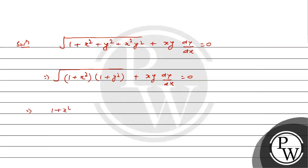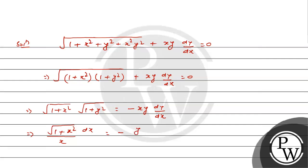Separating the variables, we get the square root of (1 plus x squared) times x dx equal to minus y dy divided by the square root of (1 plus y squared). So the variables x and y are now separated.